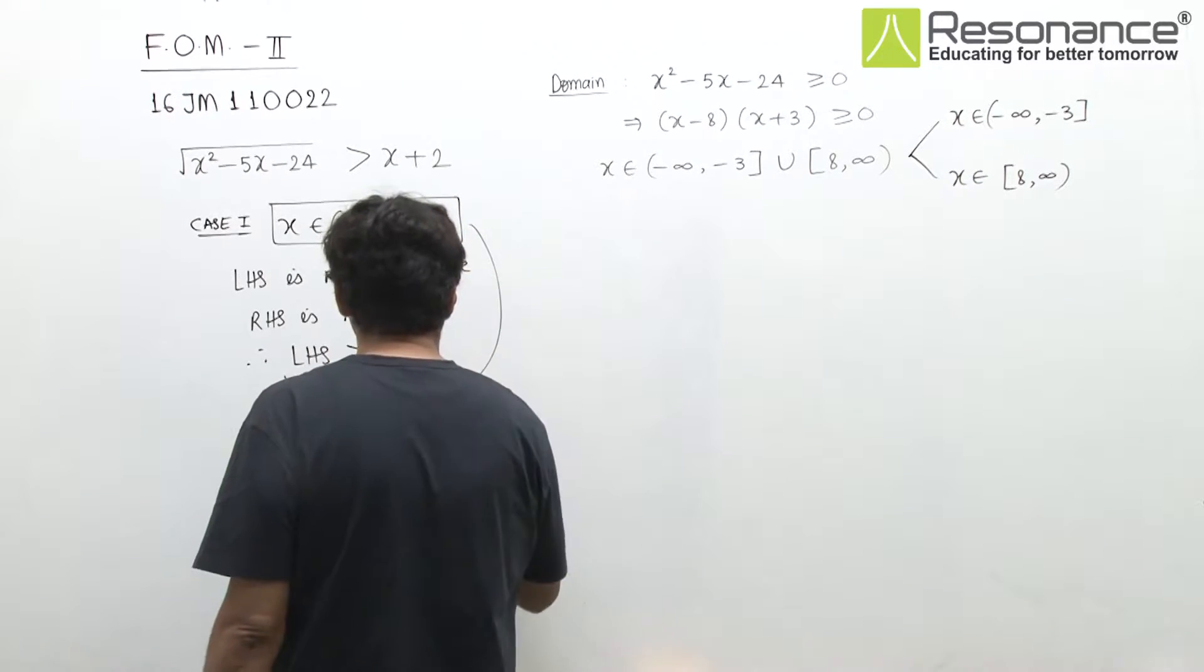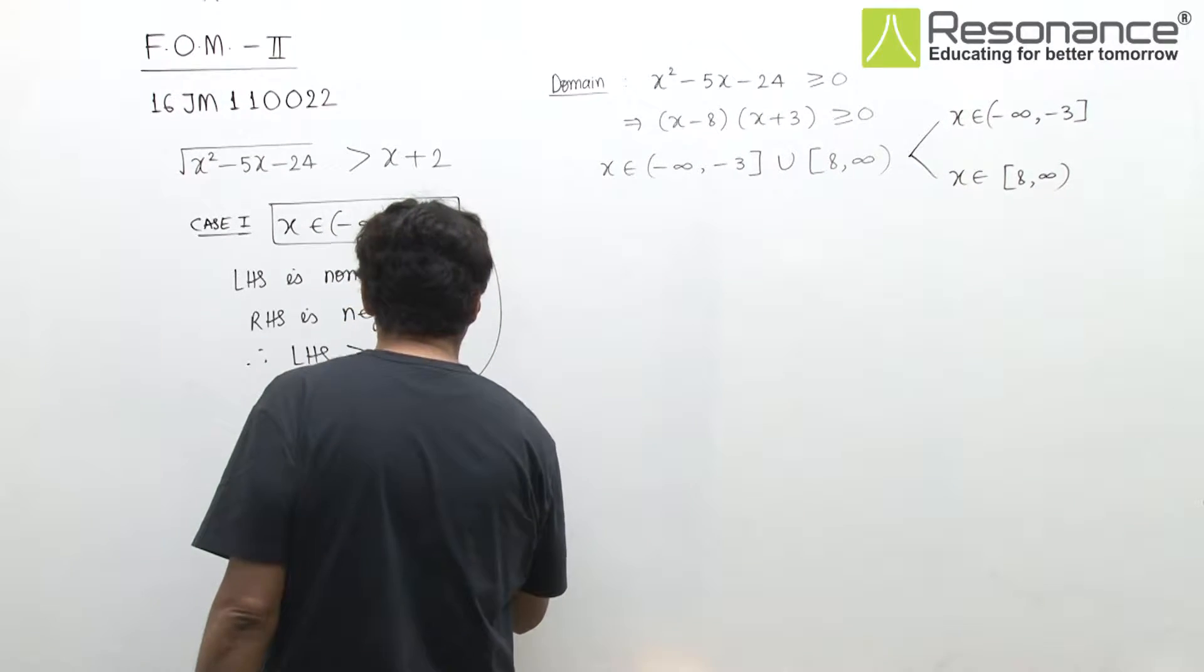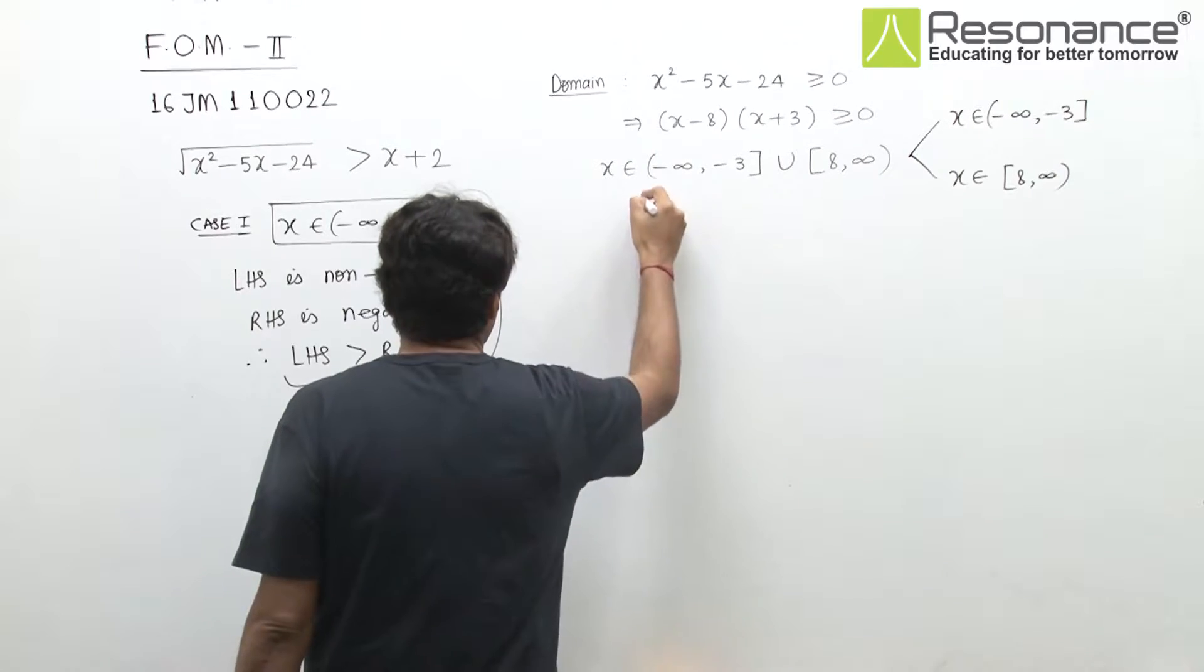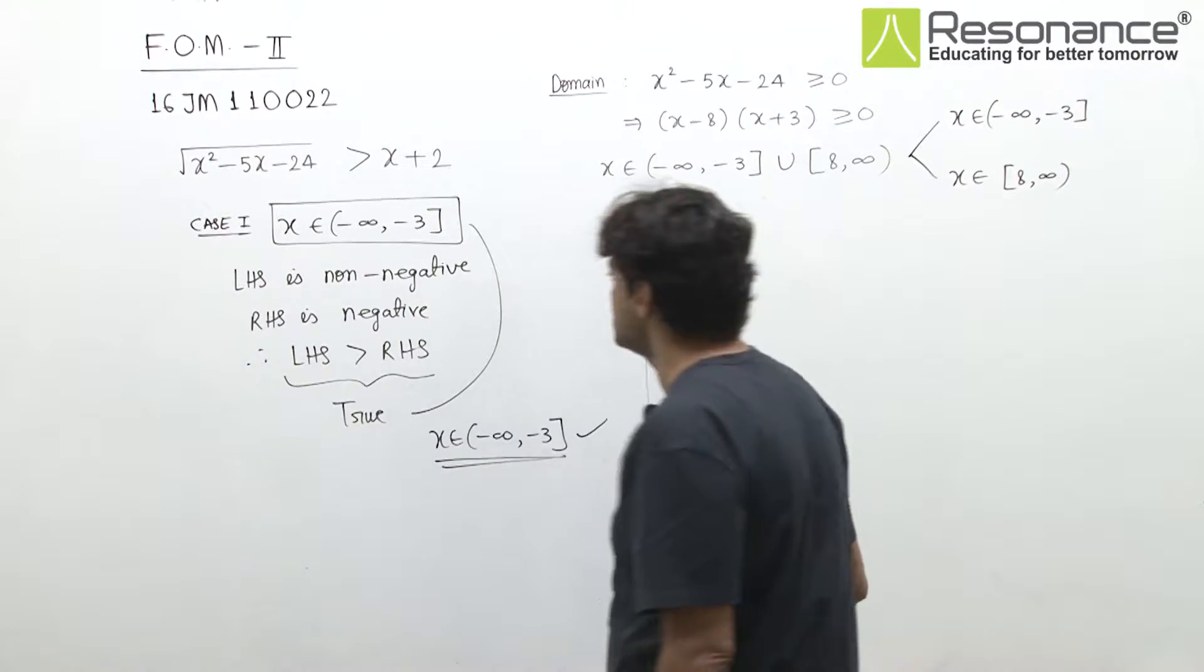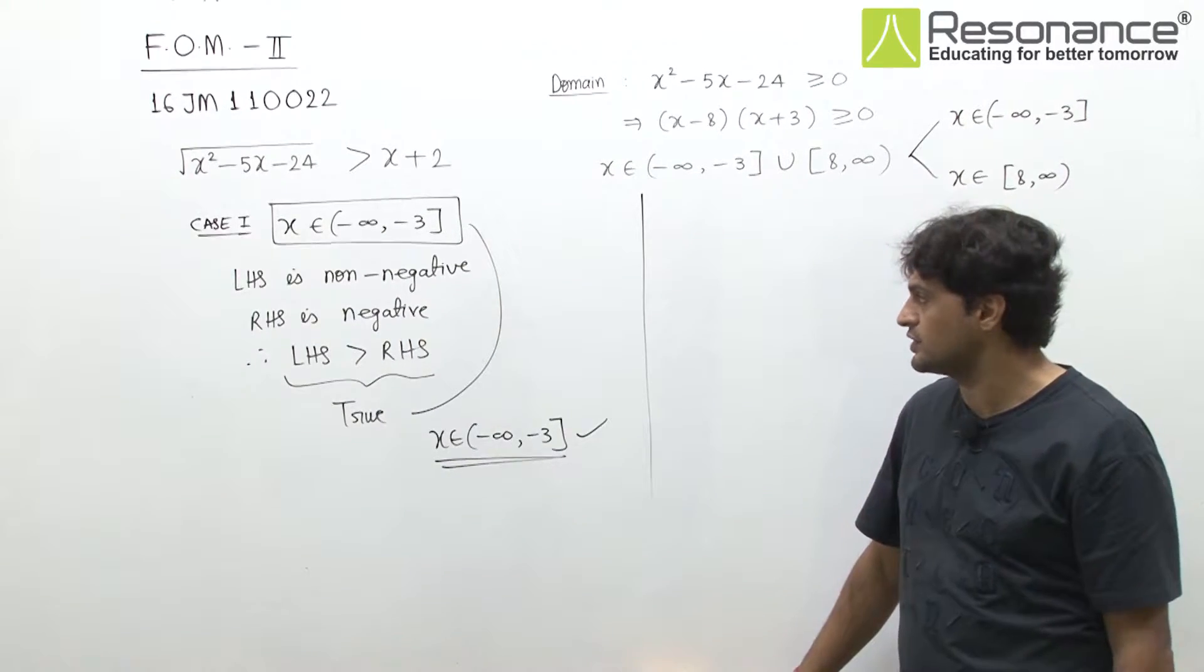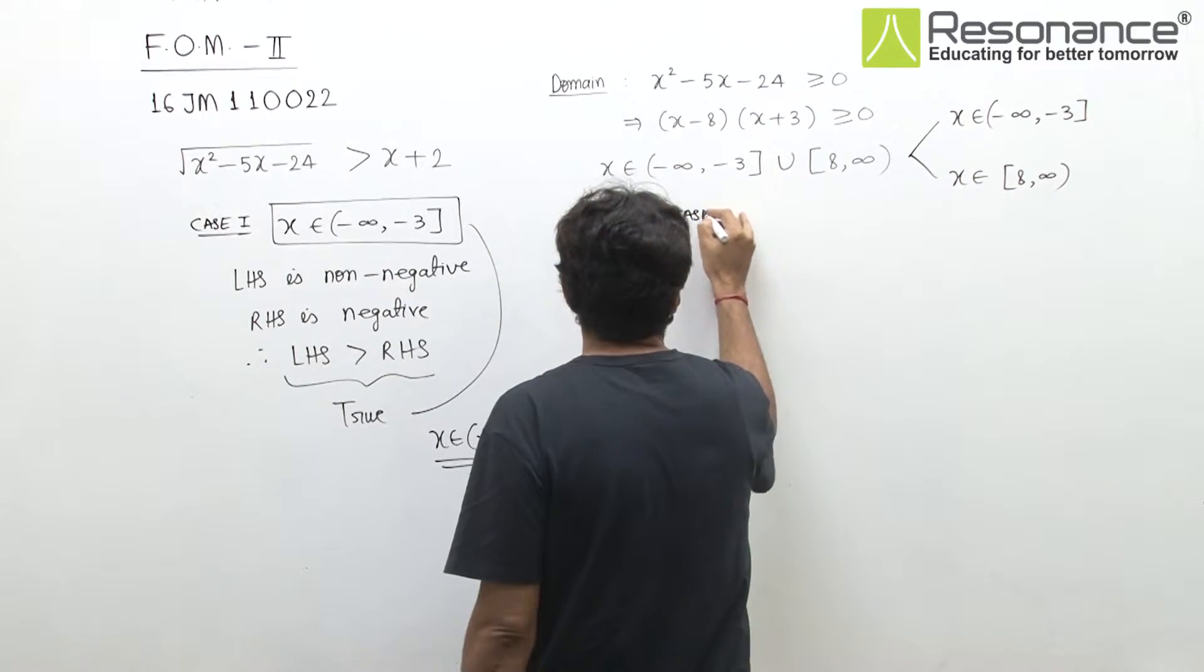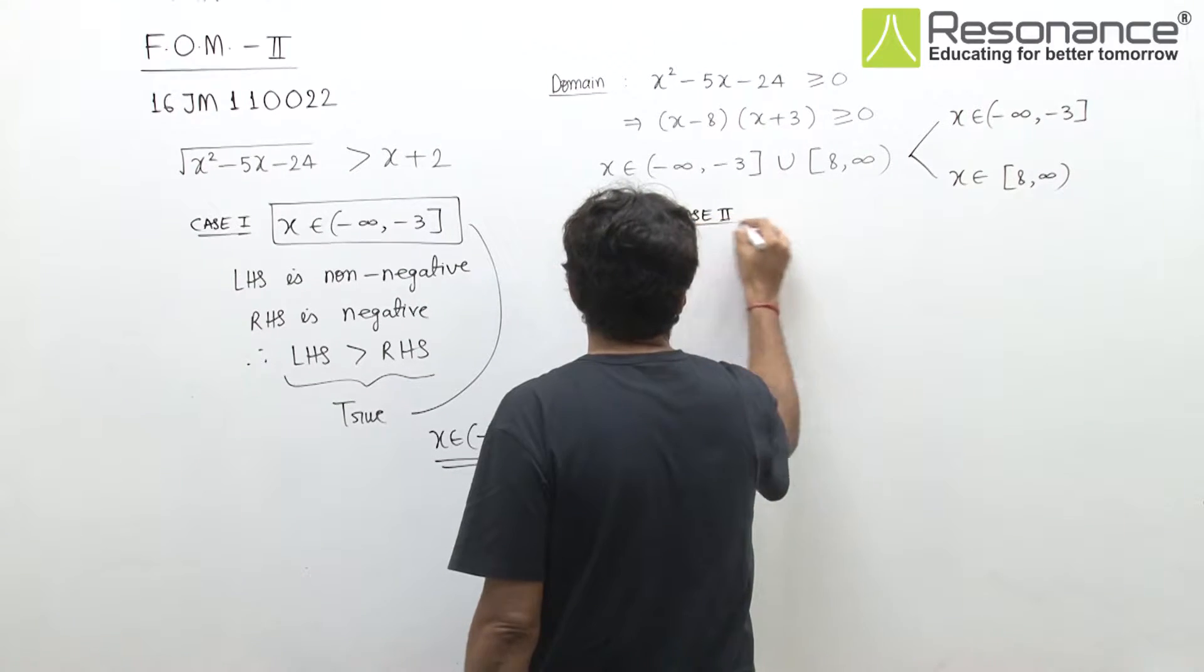That means in this set, all values of x will satisfy. So this part of the domain, (-∞, -3], all values satisfy. Now let's take the second case when the domain is [8, ∞), the second part of the domain.